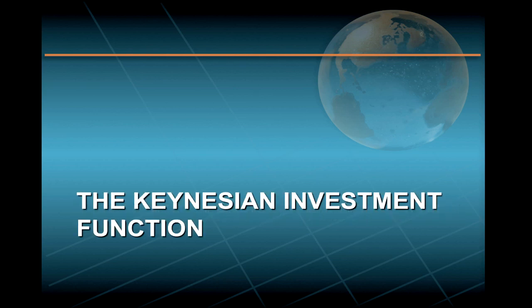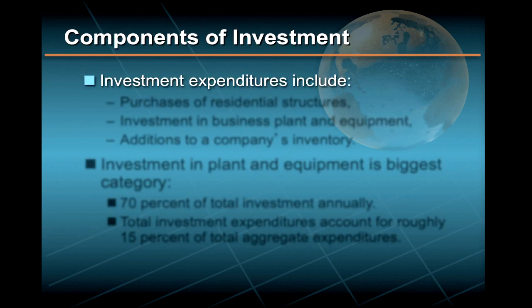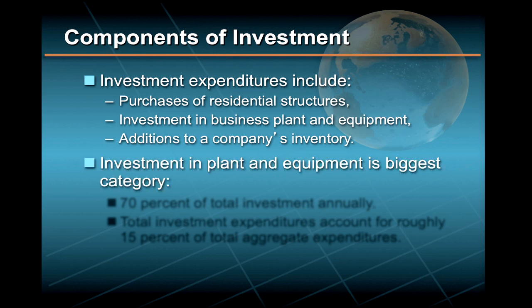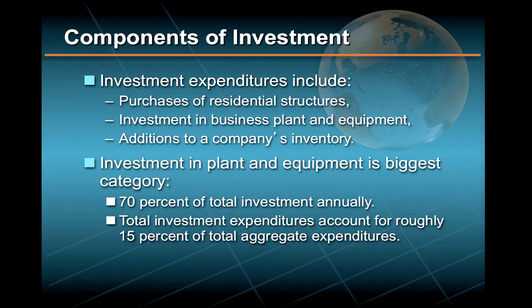Let's turn now to the second major component of the aggregate expenditures curve, namely investment. Investment expenditures include purchases of residential structures, investment in business plant and equipment, and additions to a company's inventory. Investment in plant and equipment is by far the biggest category, averaging a full 70% of total investment annually, while total investment expenditures account for roughly 15% of total aggregate expenditures.